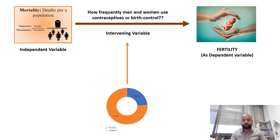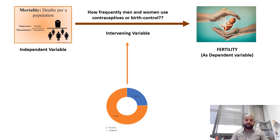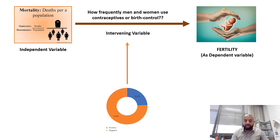For example: the mortality rate is low because the fertility rate is very high — more people are being added to the population than are dying — because people have a poor attitude towards contraceptives. You are establishing a relationship by saying men and women are not using birth control because they have a poor attitude; they feel it is against their religion, philosophy, their upbringing, or the guidance of their parents.